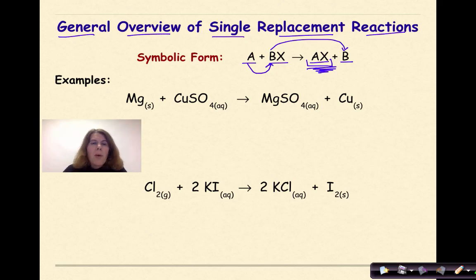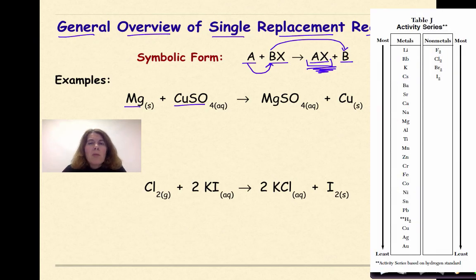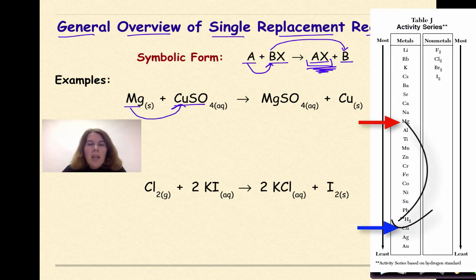Let's look at an example. Magnesium plus copper sulfate. Magnesium is more active than copper sulfate. If we were to look at table J, we would see that magnesium is at the top and copper is much lower. So magnesium has the ability to come in and kick out the copper.